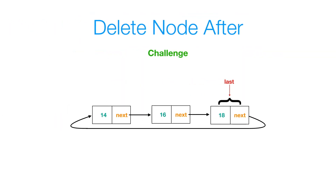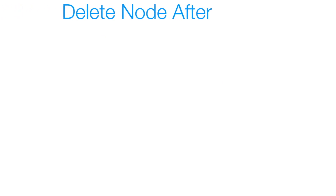Now let's delete a node after a given node in the list. In this case, suppose I want to delete the node after the node with data 14 — so it would be the node with data 16. Also keep in mind the edge case of having only one node, since that node's next references itself and I'd want to delete that node. Write a method to do this and press play when ready.